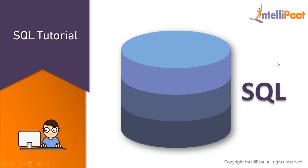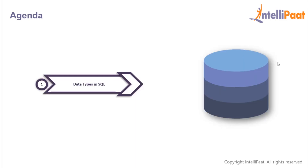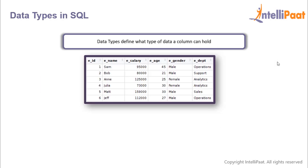Hey guys, welcome back to this SQL tutorial series. In this session we will learn about data types in SQL. A data type basically defines the kind of data that will go into a particular column. It needs to be kept in mind that all the entries of one particular column must have the same data type.